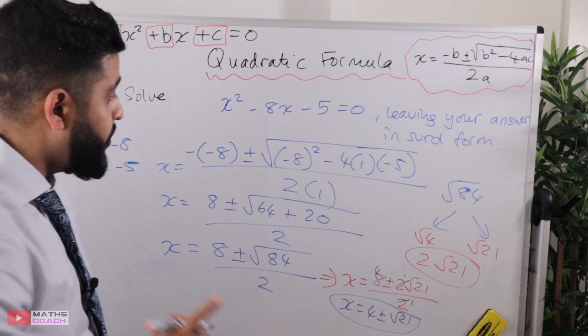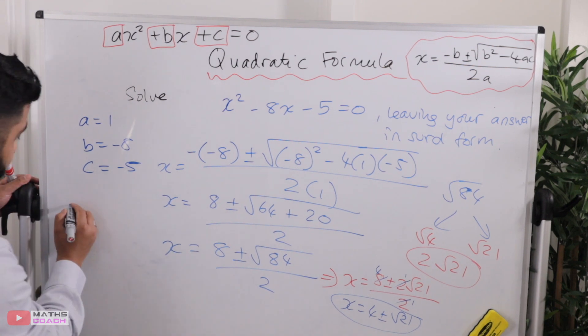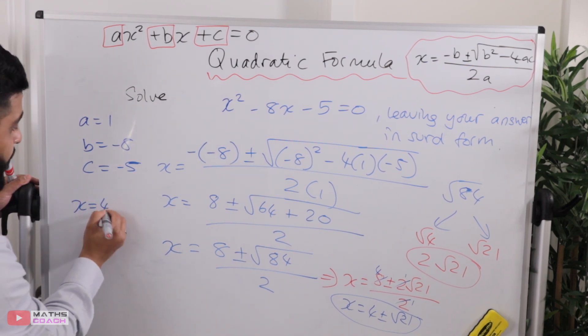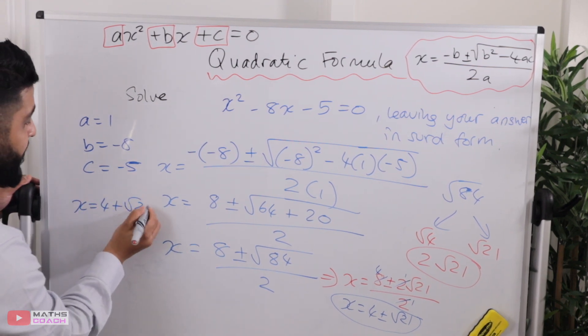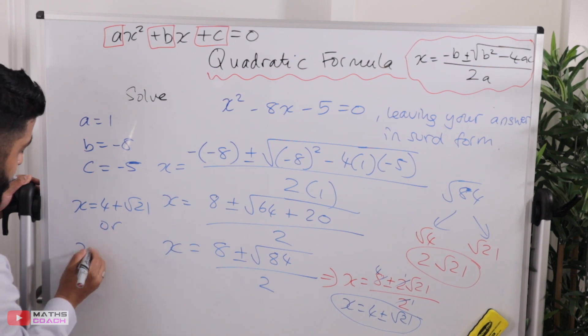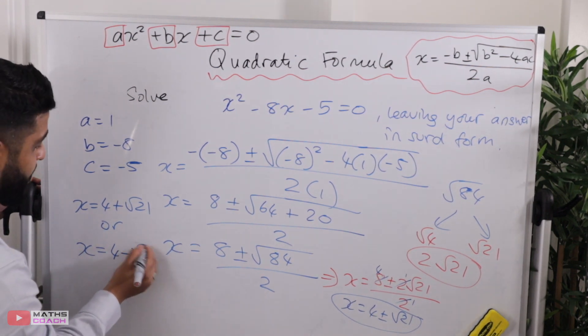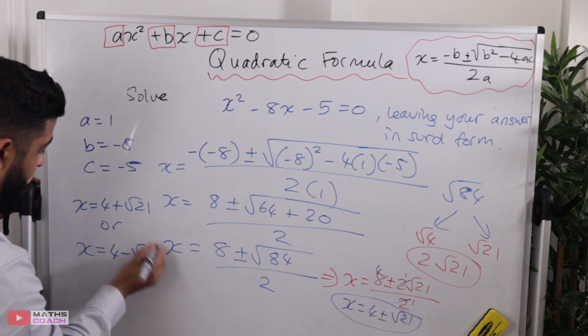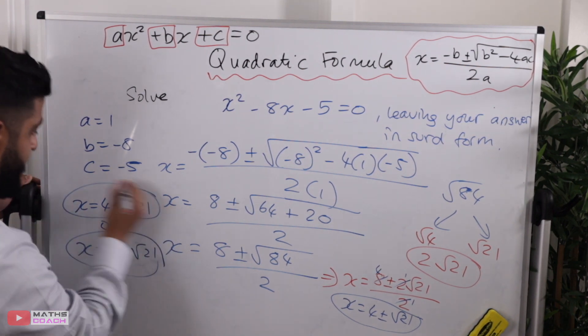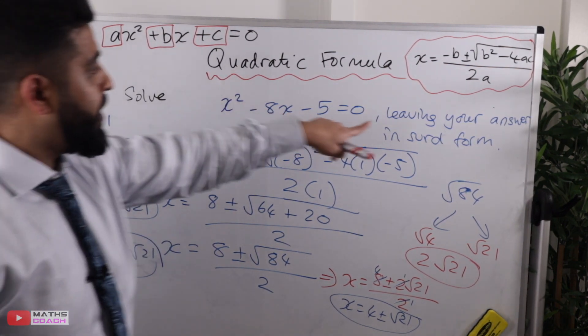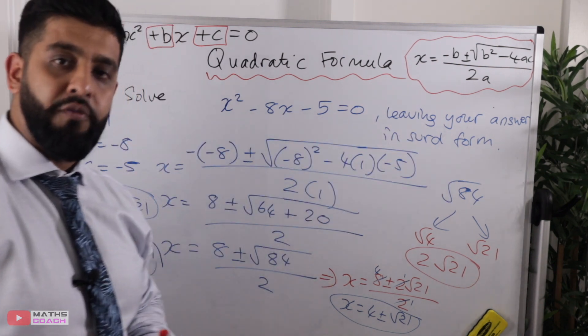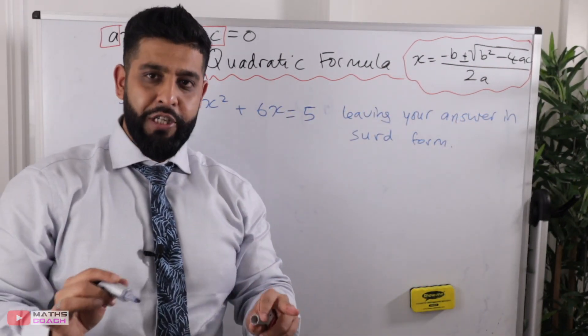So my two solutions are going to be x equals 4 plus root 21, or x equals 4 minus root 21. And that is the answer in surd form. On to our final question.